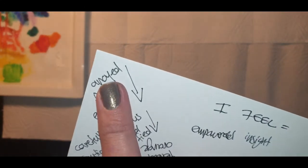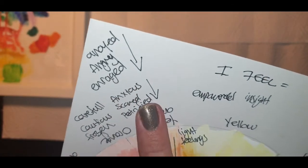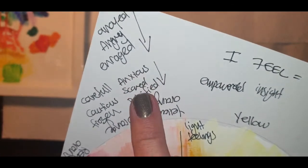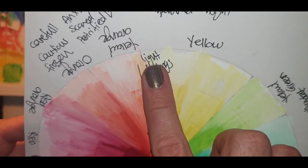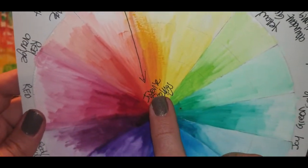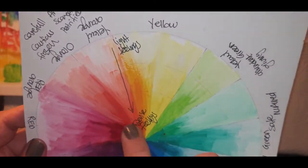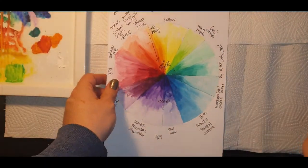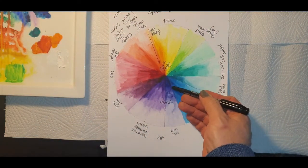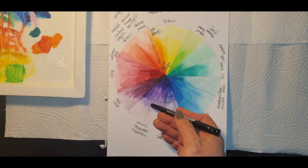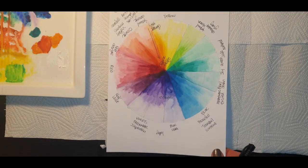For example, annoyed becomes angry becomes enraged, or anxious becomes scared becomes petrified, and so forth. So from the lightest aspect of an emotion to its most intense part, and then I want you to place the different intensities of these emotions on your color wheel.